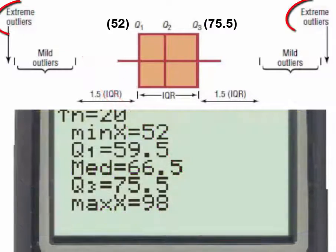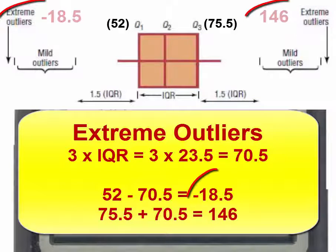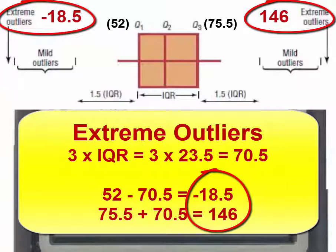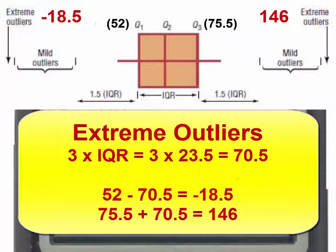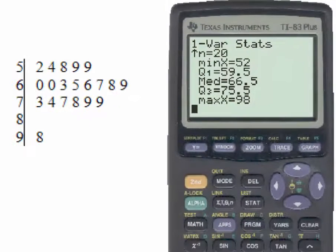Extreme outliers are found in the same way by taking 3 times the interquartile range to give us the upper and lower numbers beyond which we would find extreme outliers. If we were asked to find the variance for this data set.